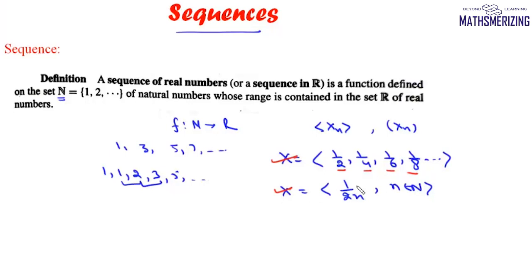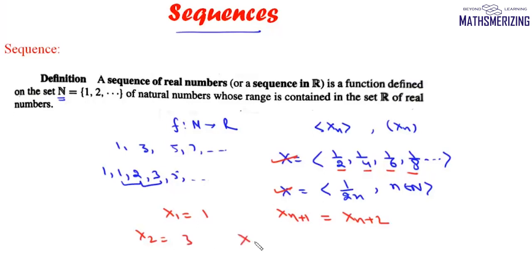Another way to define sequences is using recursive relations. For example, let x₁ = 1 and xₙ₊₁ = xₙ + 2. Then x₂ = 1 + 2 = 3, x₃ = 3 + 2 = 5 — so this is actually the sequence of odd natural numbers, defined using a recursive relation.